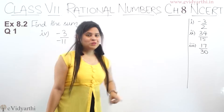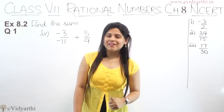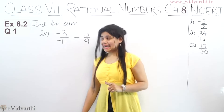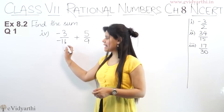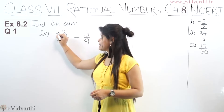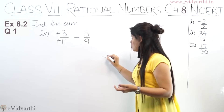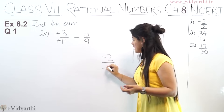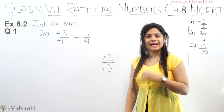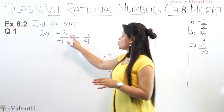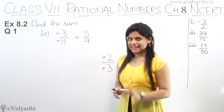Now coming to the fourth part. The fourth part has minus 3 upon minus 11 plus 5 upon 9. You can see that minus 3 upon minus 11 — since both numerator and denominator have a minus sign, the minus cancels minus directly. So this becomes 3 upon 11. And then we have plus 5 upon 9.